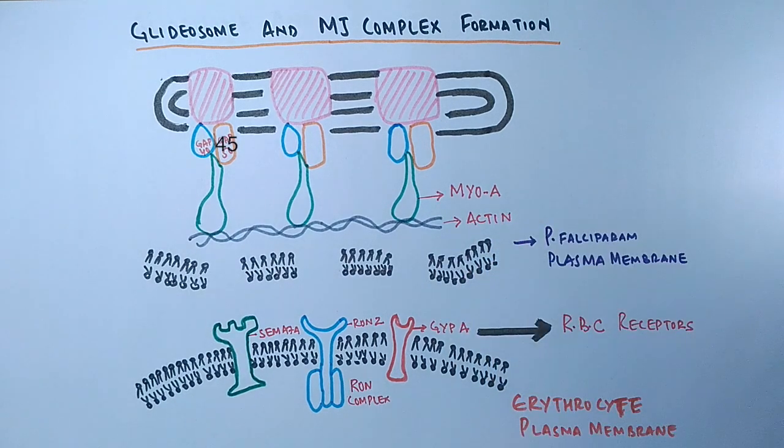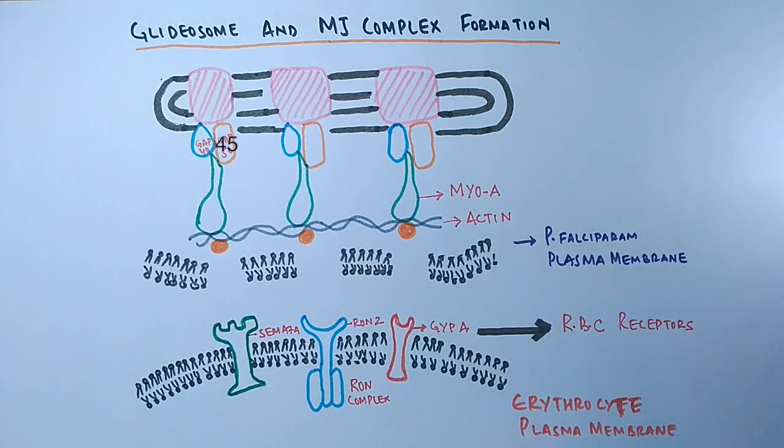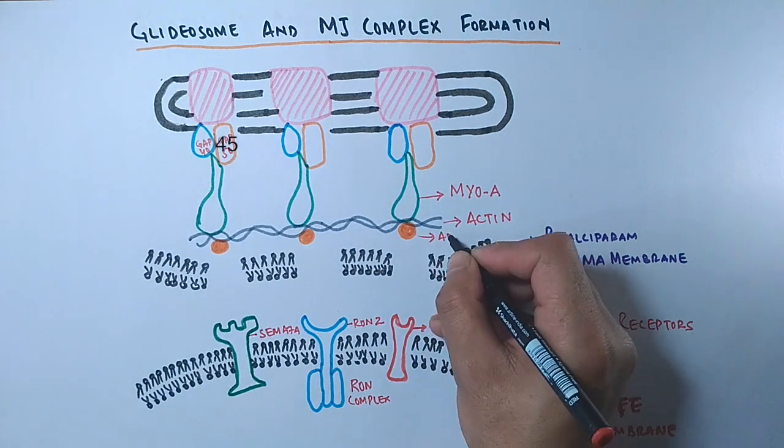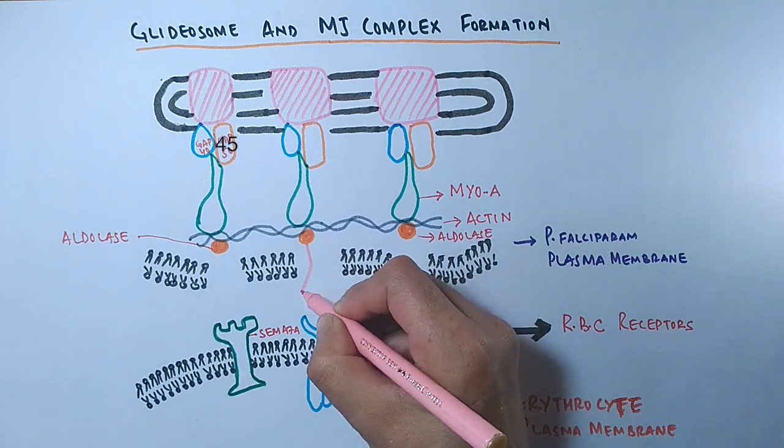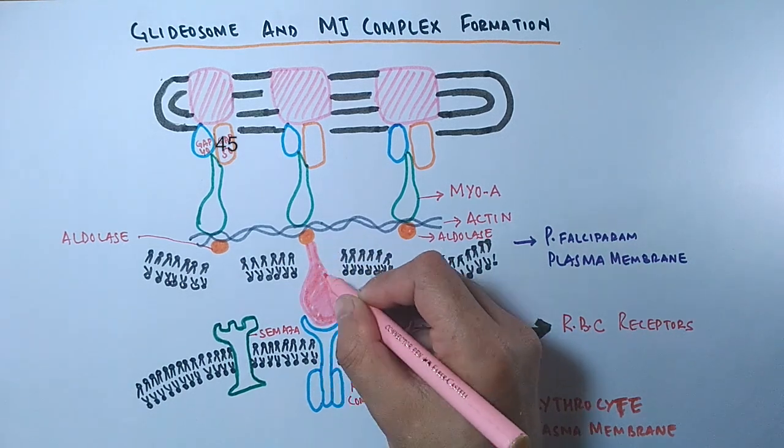These actin filaments are the core particles that help in the motility of the Plasmodium. And to these actin filaments there is a molecule of aldolase attached to it. It bridges the ligands to the actin filaments. The ligands interact with the host cell receptors and are linked to the Plasmodium via these aldolase molecules.